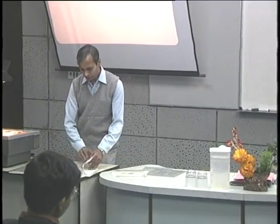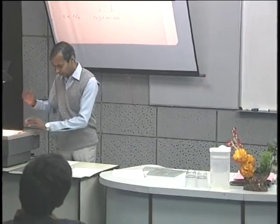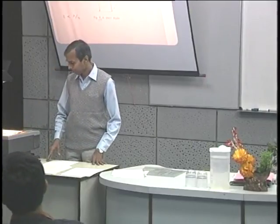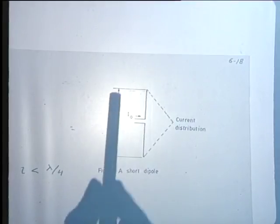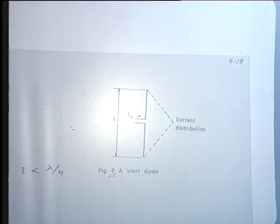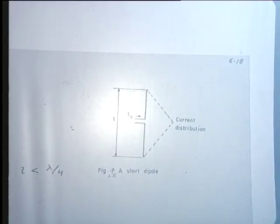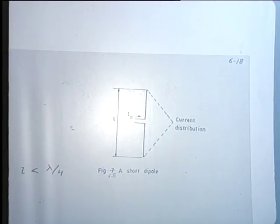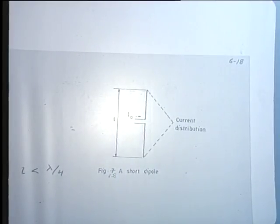Going back to obtaining some quantitative results, you would recall that last time we considered a short dipole antenna, and as long as the overall length was less than a quarter wavelength, we were able to approximate the current distribution as a triangular function. Then we considered what would be an effective uniform value of the current on such a length, and therefore extended the results for the alternating current element or the Hertzian dipole, applicable to a practical radiator like this short dipole.